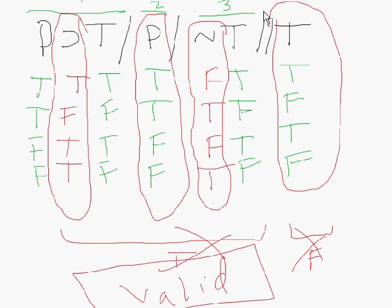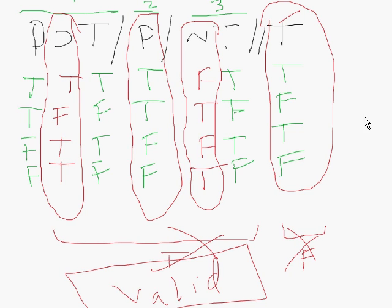And that should make sense, because look at this conditional — it says if you have P, then you get T. Premise 2 says I have P. It only makes sense, therefore, that I have T. The third premise, negation of T, I threw in just to see if I could confuse you. So that's another example of using truth tables for arguments — it's quite straightforward, actually.